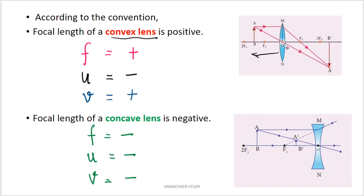v is the distance from the optical center to the image. For a convex lens, the image forms on the right side in the same direction as the incident ray, so v is positive. For a concave lens, the image forms behind the lens on the same side as the object, so v is negative. This is the sign convention for students.